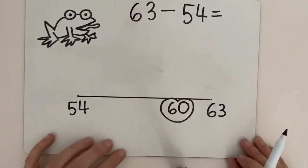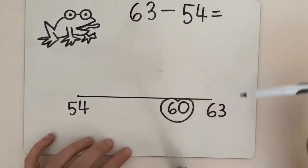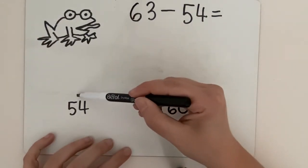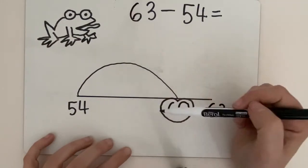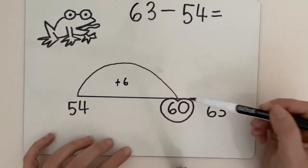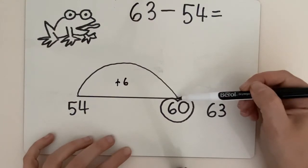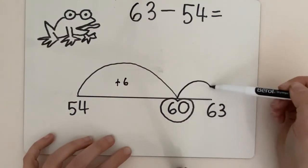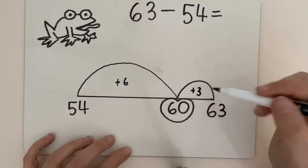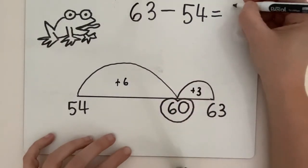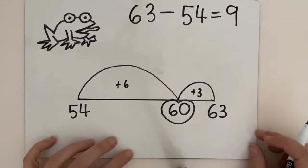Okay, 63 take away 54. We're going to count it up. 54 jump to 60. Using your number bonds, you know that's a jump of 6. 60 to get to 63. It's a smaller jump and we're adding 3. Add those together, 6 add 3, 9. There is a difference of 9.